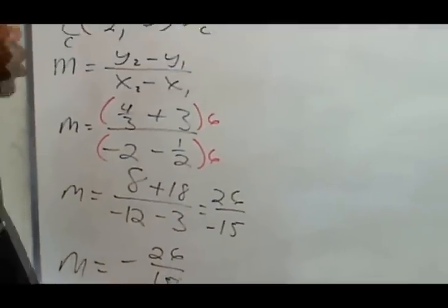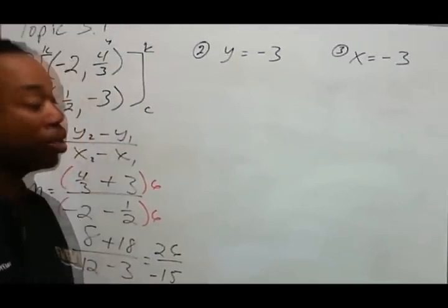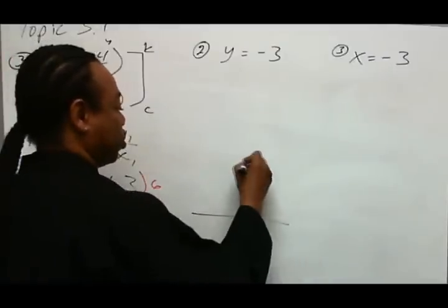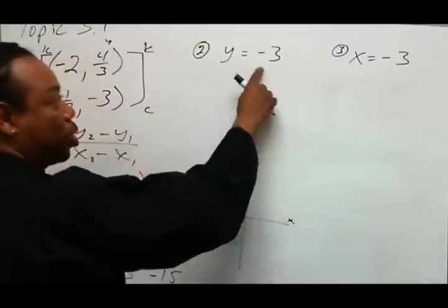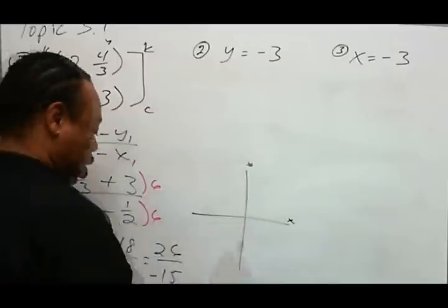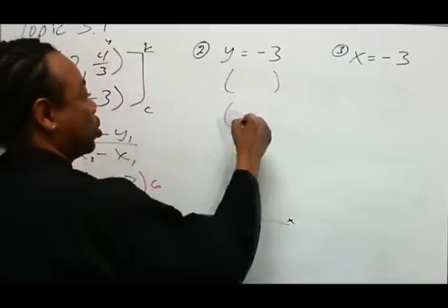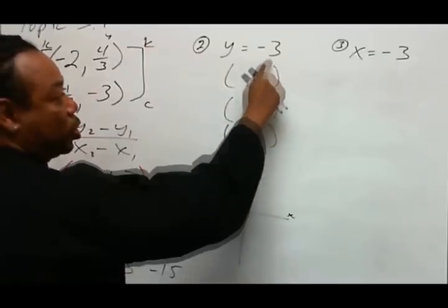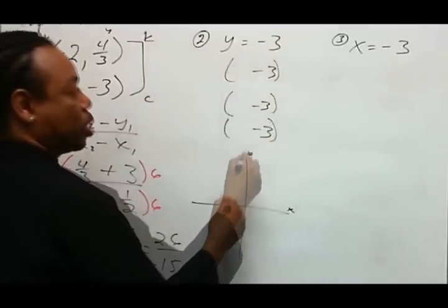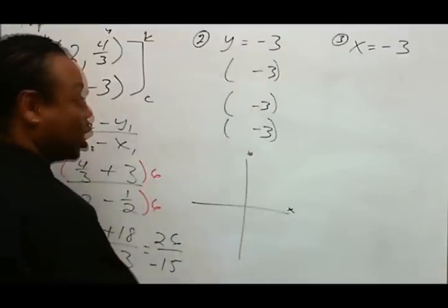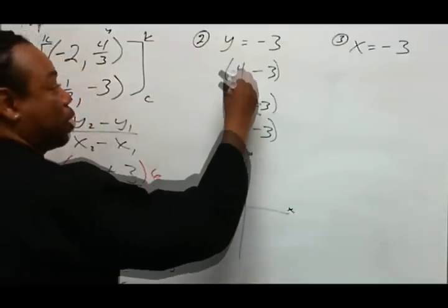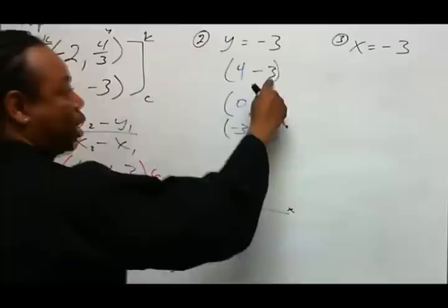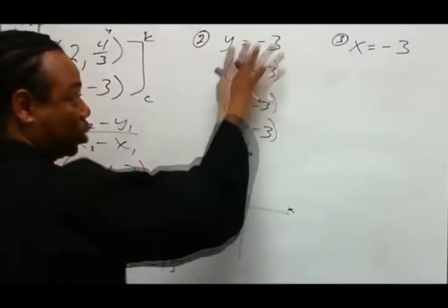Next, I want to graph the special equation y equals negative 3. Y equals negative 3 is going to be a horizontal line. This is one of our specials — when there's simply a y with no x's, this is going to be horizontal. To create our points, we make all the y-values negative 3. For the x's, we can choose any numbers — let's say 4, 0, and negative 3. The y's must be negative 3, but the x's can be anything because x is missing.